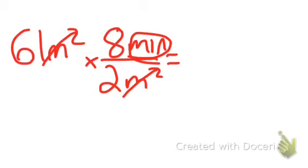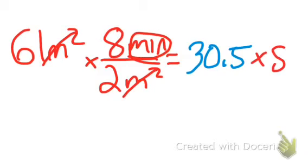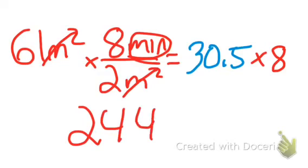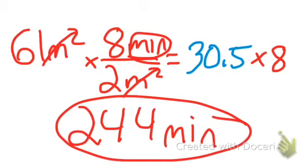So essentially we have 61 divided by 2, which I know actually is 30.5, and we still have to multiply by that 8. So when I multiply 30.5 by 8, officially still in minutes, my total answer is 244 minutes. That's how long it'll take the Roomba to clean up the room that has a square meter of 61.